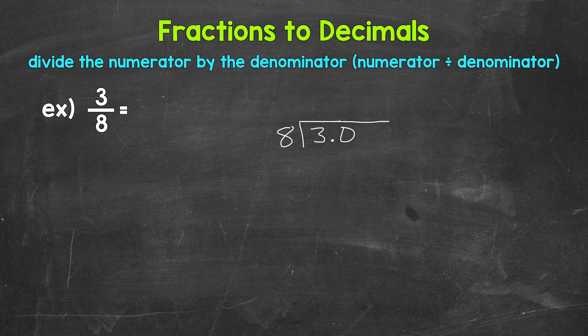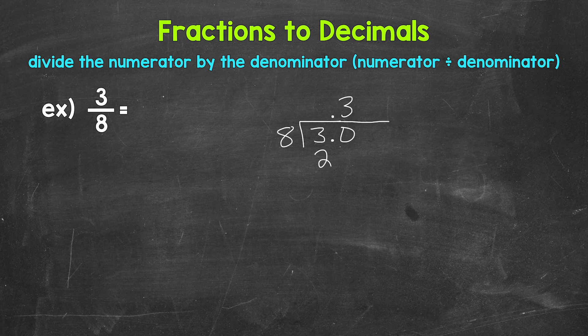Now once we have that decimal and the zero, we can bring the decimal straight up into where the quotient — the answer — will be, and now we can think of this as 30 divided by 8. So how many whole groups of 8 in 30? That's 3, which gets us to 24. We put the 3 above the zero since we used that zero and thought of this as 30 — that's going to line us up correctly. Now we multiply: 3 times 8 is 24.